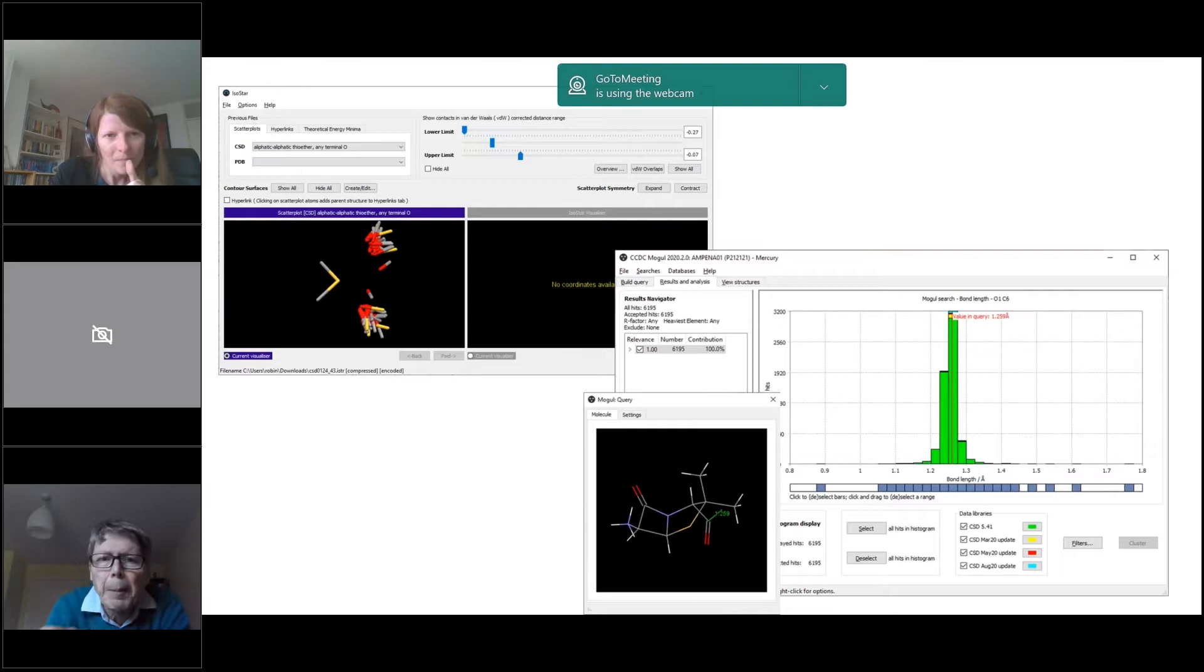Mogul is a vehicle for very quickly getting distributions of intramolecular geometry parameters. The reason that these differ from other software functionality is that they're not based on the raw CSD, they're based on derived databases. Most of what I have to say today will be about Mogul and IsoStar, but really what they're about is the concept of creating derived databases from the CSD. The advantage of that is it gives users and client applications very quick and very easy access to data that they want.